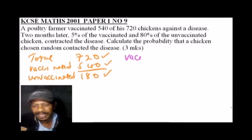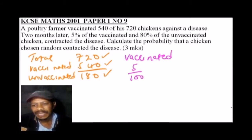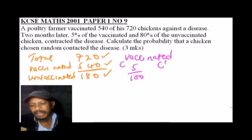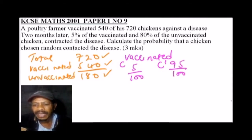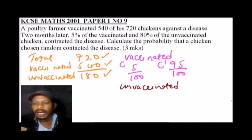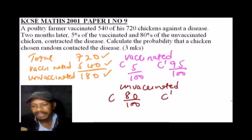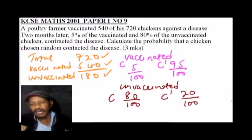We are told 5% of the vaccinated contacted the disease. We can use a strikethrough to indicate the ones that did not contact, so it means it's 95 out of 100. Then for the unvaccinated, we are told 80% contacted the disease, so from 100 we get a difference of 20 — meaning 20% did not contact the disease.